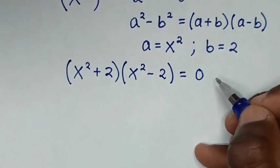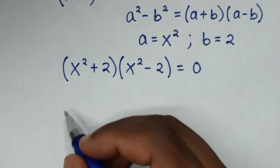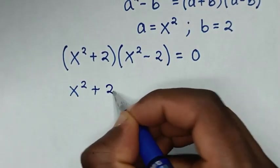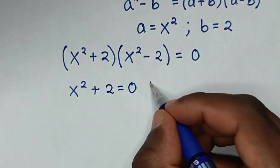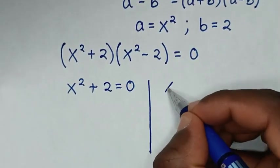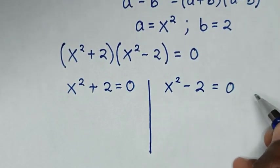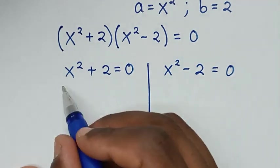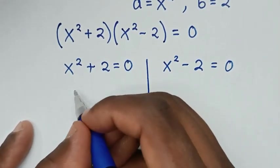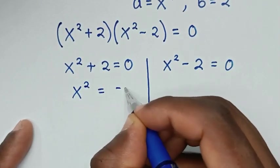In the next step, from here we have two solutions. The first solution is x² + 2 = 0, and the second solution is x² − 2 = 0. To solve the first solution, we take 2 to the right side, so it will be x² = −2.